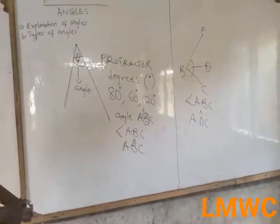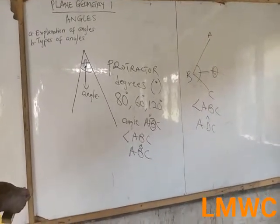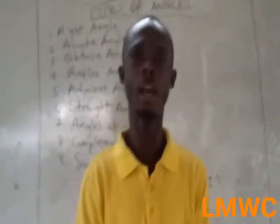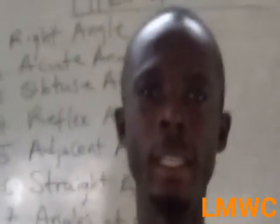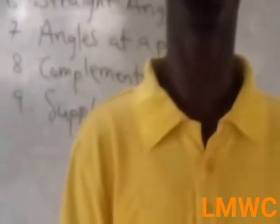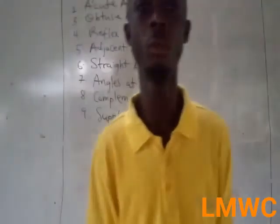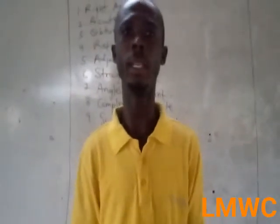Now let us move on to the types of angles. We have right angle, acute angle, obtuse angle, reflex angle, angles on a straight line, supplementary angle, complementary angle, and many more. There are also other types of angles in a parallel line — vertically opposite angles, co-interior angles, alternate angles, corresponding angles, and many more. But basically I want to talk on these angles first.